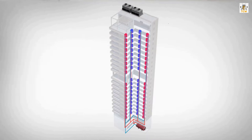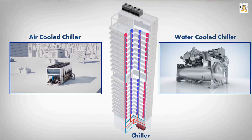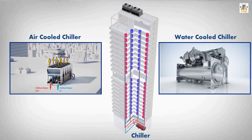The chiller is the equipment used to produce chilled water, which is flowed to the air handling unit. There are two types of chiller: air-cooled chiller and water-cooled chiller. An air-cooled chiller removes heat from the chilled water using outdoor air directly and is usually placed at the top of the building. A water-cooled chiller uses another water called condenser water to remove heat from the chilled water, and is usually placed at the basement. In this video, we are using a water chiller as an example.